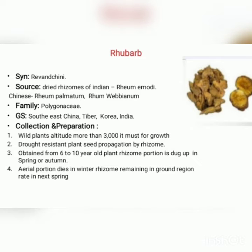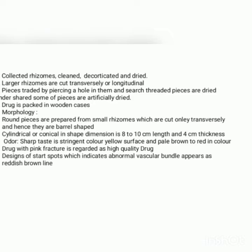First drug: Rhubarb. Synonym: Revdandachini. Source: dried rhizomes of Indian Rheum emodi, Chinese Rheum palmatum, and Rheum webbianum, belonging to family Polygonaceae. Geographical source: south-east China, Tibet, Korea, and India. Collection and preparation: plants grow at altitudes above 3000 m; drug obtained from 6–10 year old plants by seed propagation or rhizome. Rhizome is dug up in spring or autumn; the aerial portion dies in winter while the rhizome remains in the ground and regenerates in next spring. Collected rhizomes are cleaned, decorticated, and dried; larger rhizomes are cut transversely or longitudinally; pieces are threaded and dried, then packed in wooden cases.